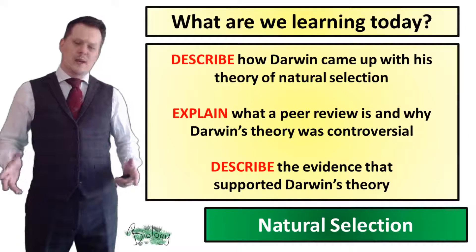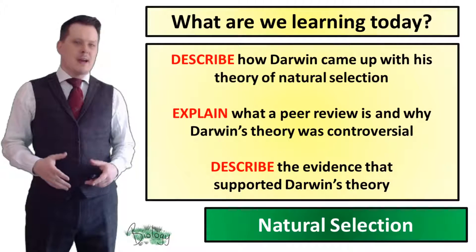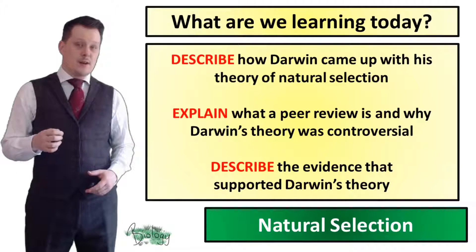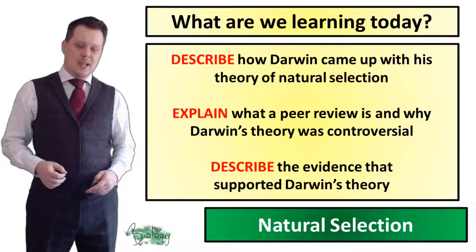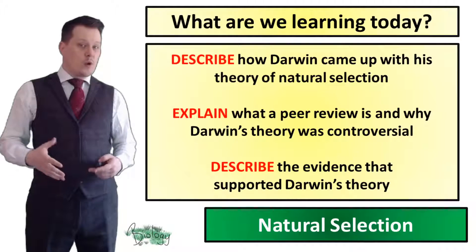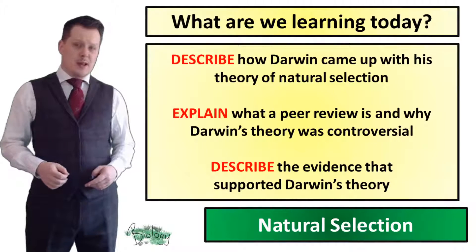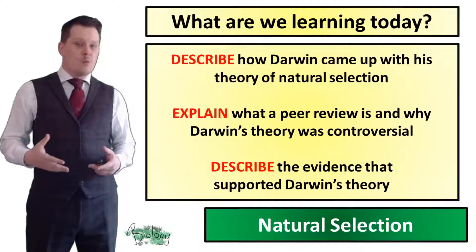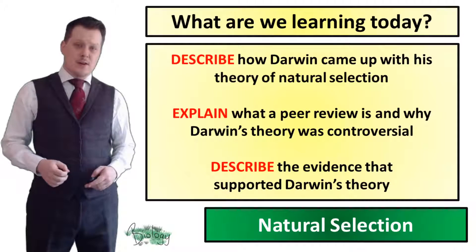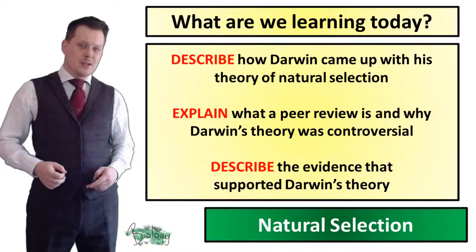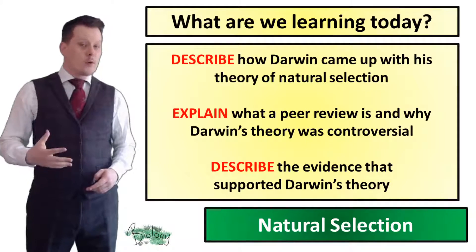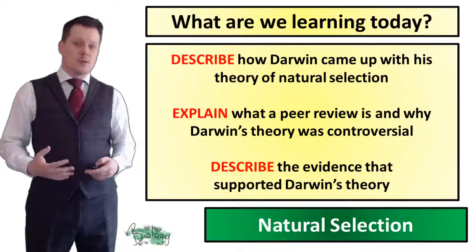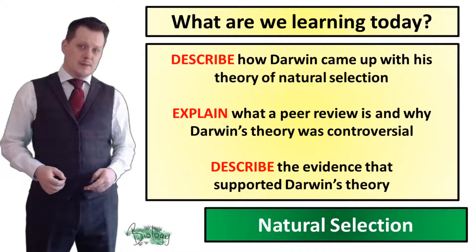In today's lesson we're going to be describing how Darwin came up with his theory of natural selection. We are also going to explain what a peer review is and why Darwin's theory was so controversial at the time, and we're going to explain the evidence that supported Darwin's theory.